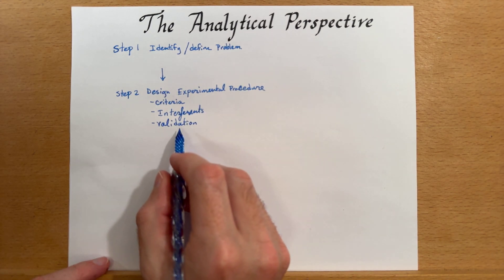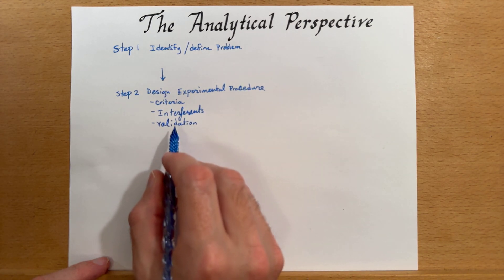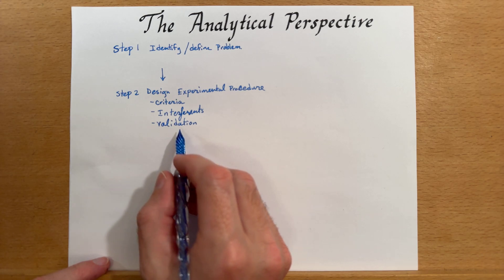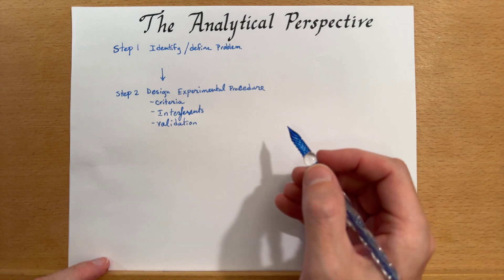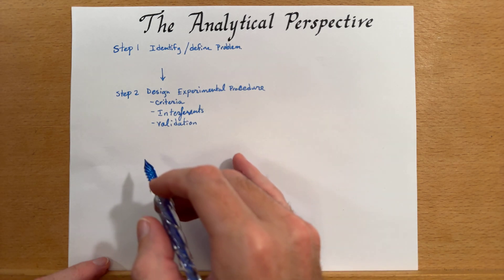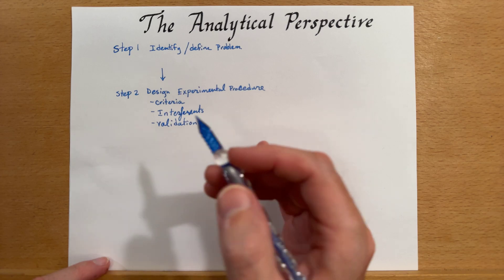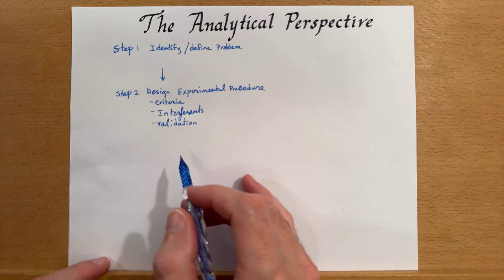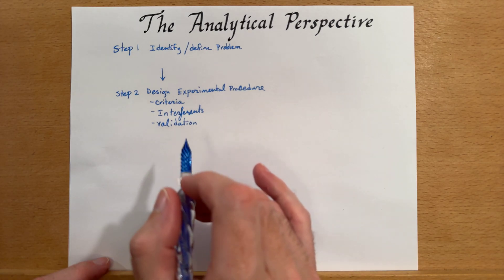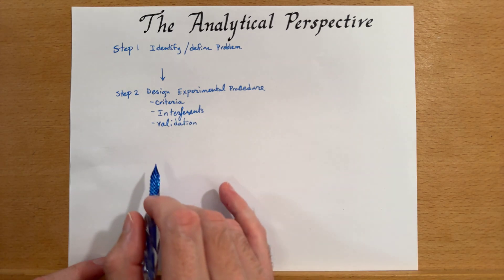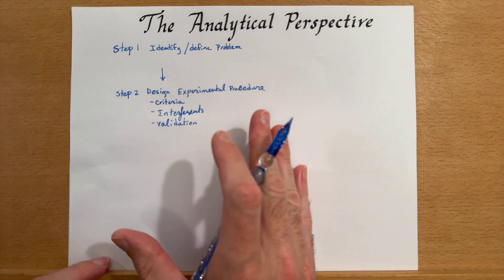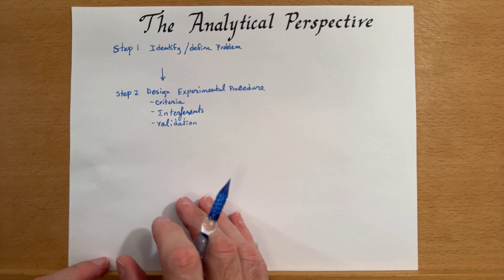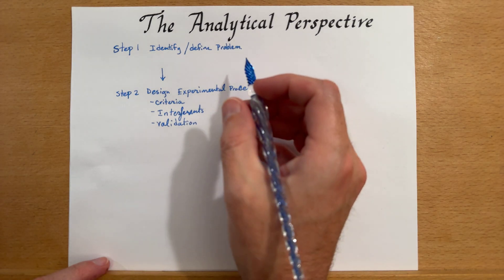How do we know that our measurement actually worked? We'll have to check that somehow. Sometimes that is by doing a different analytical method that we have already established, but maybe it takes longer, maybe it's not as well suited, but we can check with this method and another method, or we can make a sample where we know how much of something is in there, and then we can see if we're getting the answer that we expect. And that's validation.